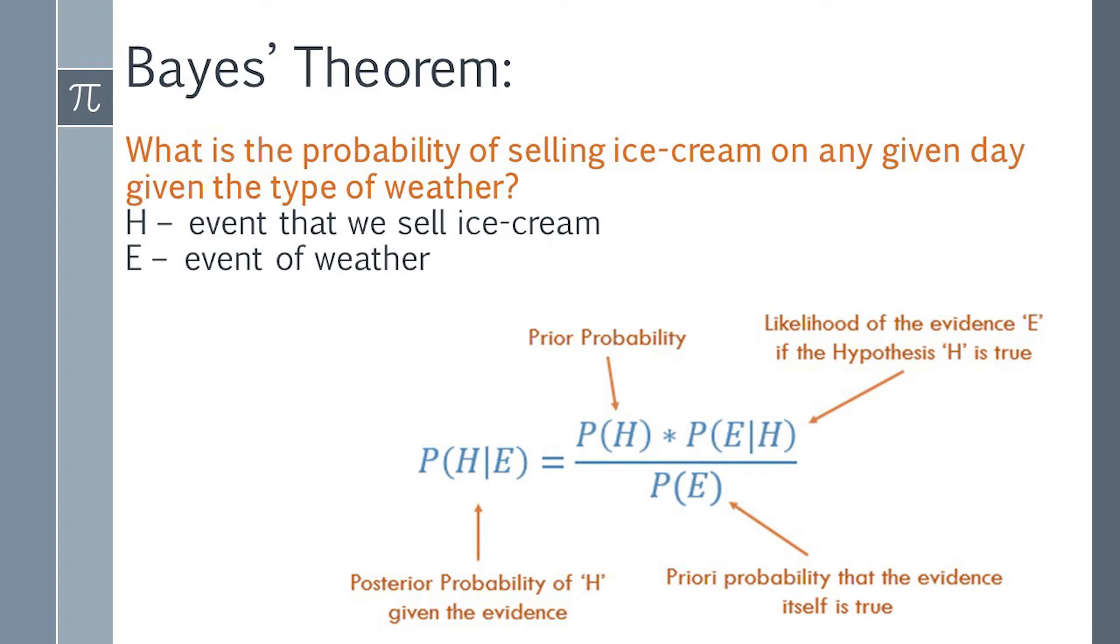In our example, this is P(H), which is equivalent to ice cream sale. That is, the probability of selling ice cream regardless of the type of weather outside. For example, I could look at the data that said 30 people out of the potential 100 actually bought ice cream at some shop somewhere.